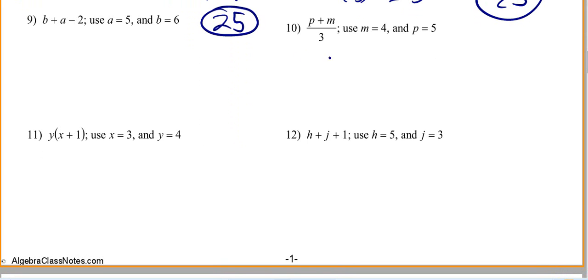Let's do number 10. P plus M—well, P is 5, so I want to write down 5 plus M. What's M? 4. It's divided by 3. There's kind of an understood parenthesis here. If you don't see the parenthesis, you always do what's on top of your fraction bar first, because otherwise you'd wind up with 5 plus 4 divided by 3 and get some crazy number. But what's 5 plus 4? I think it's 9. 9 divided by 3 is 3.